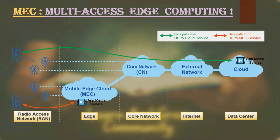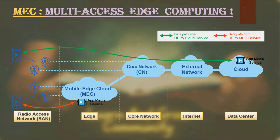By keeping those compute capacities and devices or resources close to the users, they will be able to get better latency, higher bandwidth, data processing, etc., which offers performance improvement and adds more reliability in the operations of those applications and services. That also adds security because the data is processed at the edge and not routed through multiple networks.